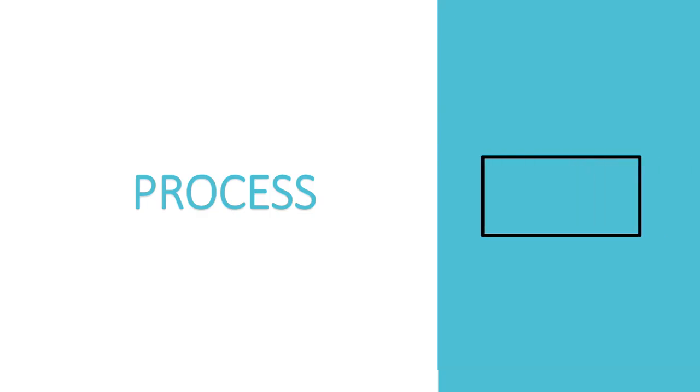Basic flowchart symbols — Start or end symbol: Also known as the terminator symbol, it is used to represent the beginning or end of a workflow. Process symbol: It is used to represent a process, action, or function.